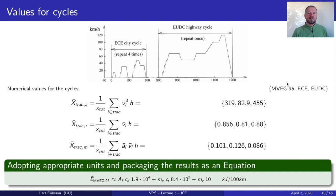The cycles we have seen — the total cycle, the European city cycle, and the highway cycle — each have their respective numbers. When we package everything with appropriate units, we get the equation seen on the overlay slide for the energy system.